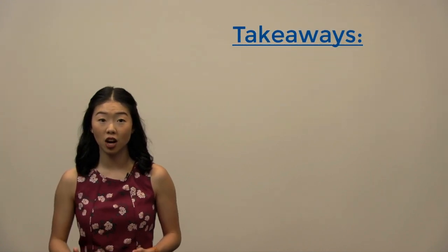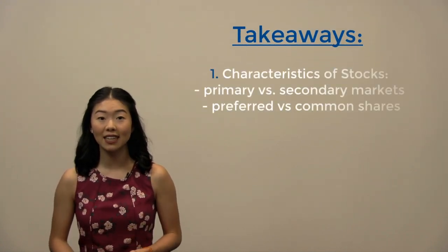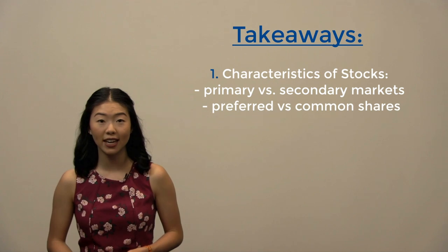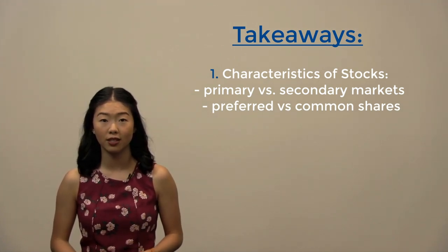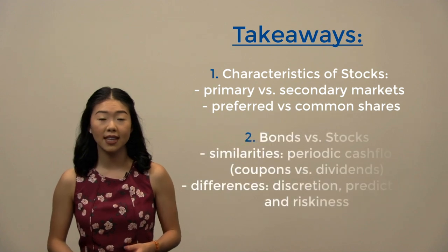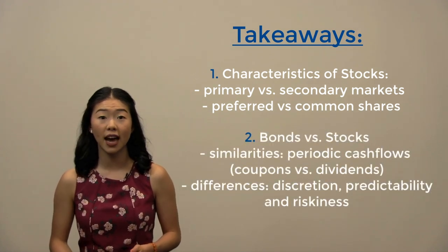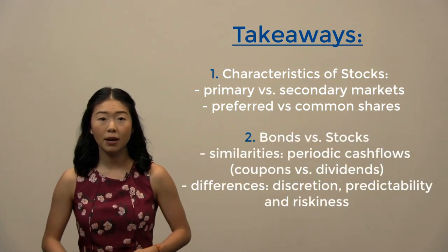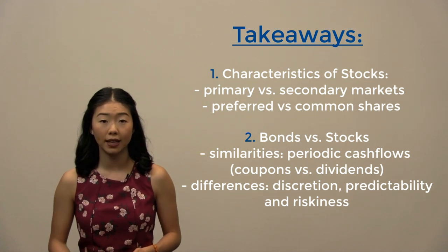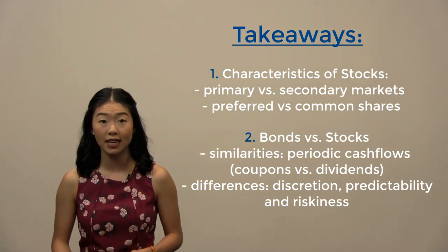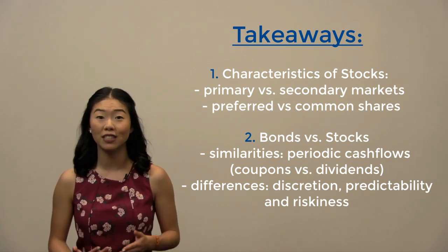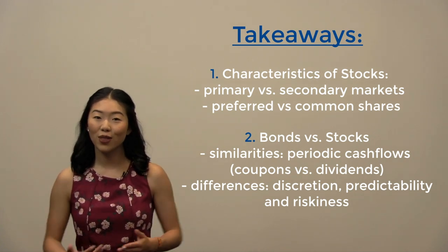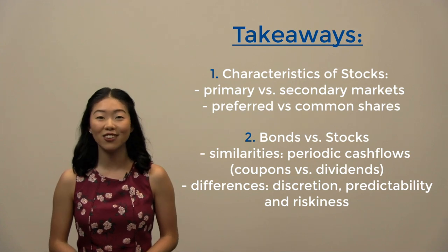To summarize, in this video we have learned about what stocks are, the primary and secondary markets in which stocks are traded, and the different rights that come with preferred shares versus common shares. We also realize that stocks pay dividends much like how bonds pay coupons, but in many aspects such as in obligation, predictability, and riskiness, stocks and bonds are two distinctly different but popular types of investments. Thank you so much for watching, and I hope to see you on the next video.